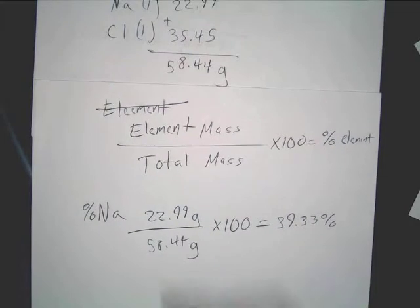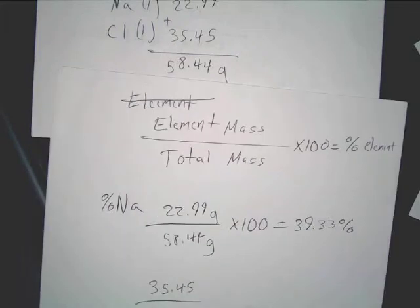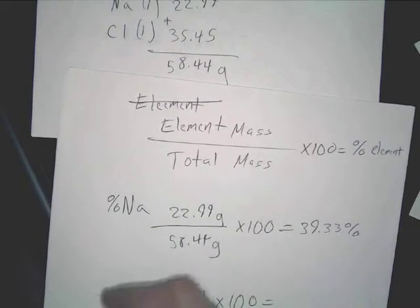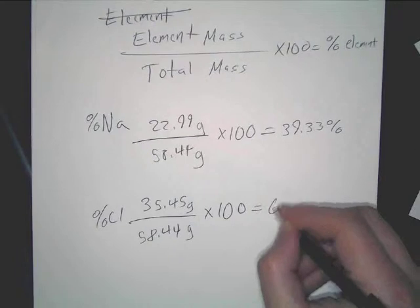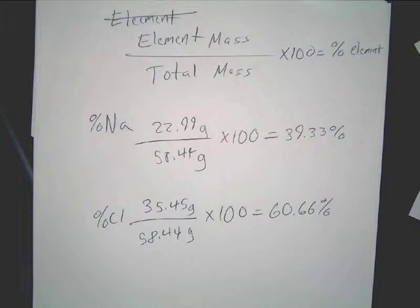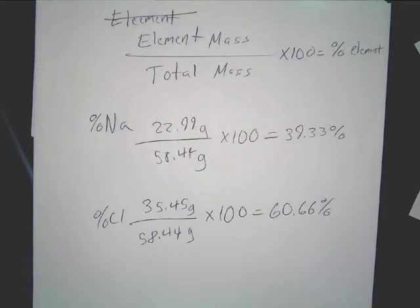The next one — you're going to do chlorine. So 35.45 divided by 58.44 times 100. This is your percentage of chlorine, and you get 60.67%. So this will add up to 99.99%, which is fine — if you round it up, it adds up to exactly 100%. This is how you do your percentages.